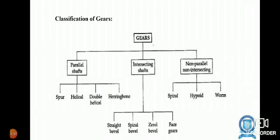Intersecting shafts are classified into straight bevel gear, spiral gear, zerol bevel, and face gears. Non-parallel shaft gears include spiral gear, hypoid gears, and worm gears. These are some worm gear applications.